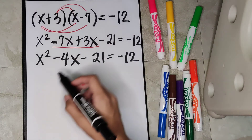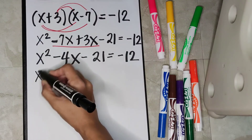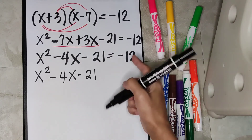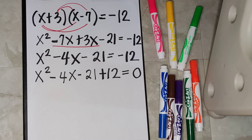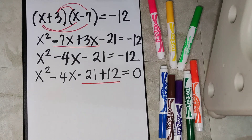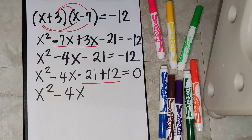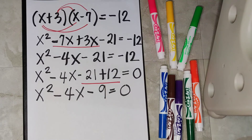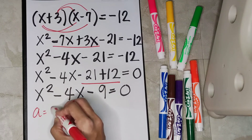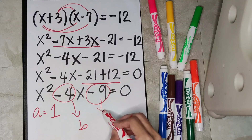This time, let us transfer negative 12 to the left side of the equation by transposing it and changing the sign from negative to positive. So this gives us x squared minus 4x minus 21 plus 12 is equal to 0. Combining negative 21 and positive 12 gives us negative 9. So we have x squared minus 4x minus 9 is equal to 0. We can say that this is an example of a quadratic equation wherein the value of a is 1, the value of b is negative 4, and the value of c is negative 9.